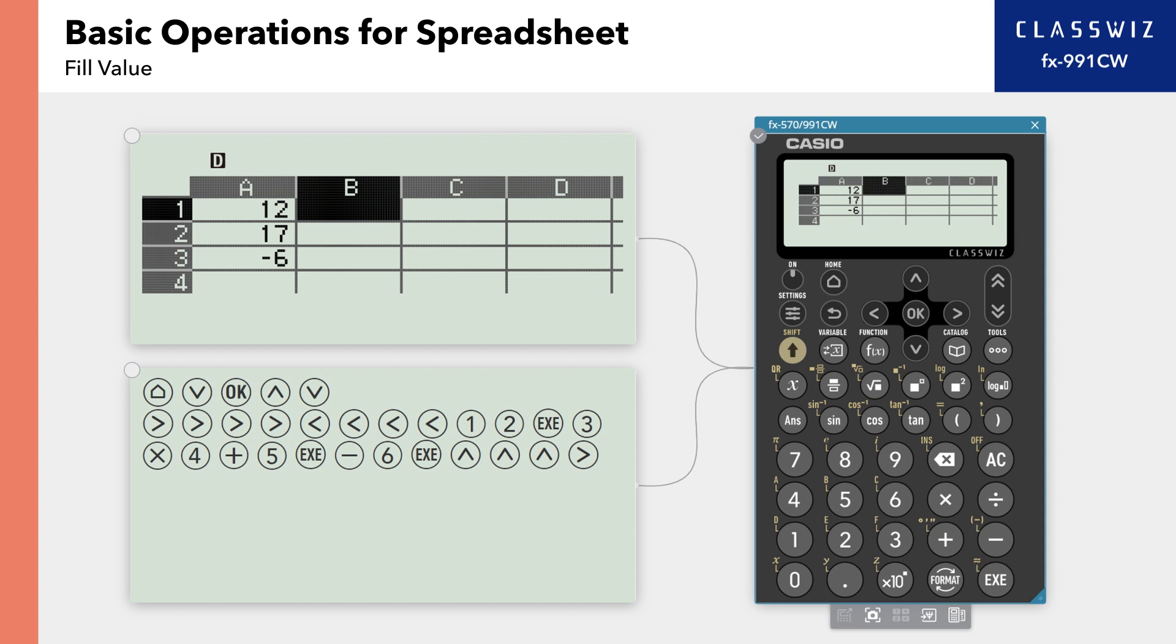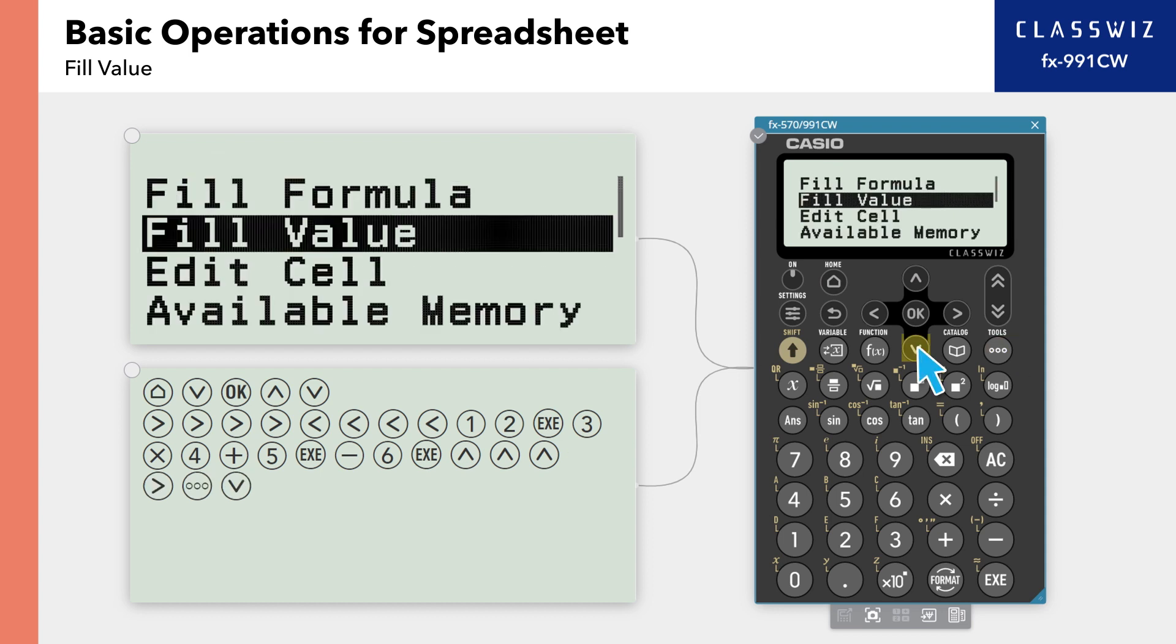For batch inputting the same number, we can use Fill Value. Press Tools, then select Fill Value.